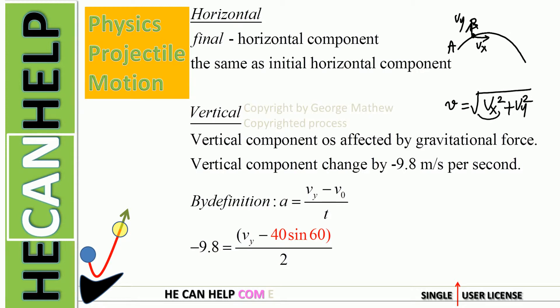The x component of the velocity vector is very simple because it is the same as at the start. The x component is not affected by acceleration due to gravity, which acts 100% along the vertical. This is positive x and this is positive y. Because of that, our horizontal component is 40 cosine 60, which equals 20 meters per second.